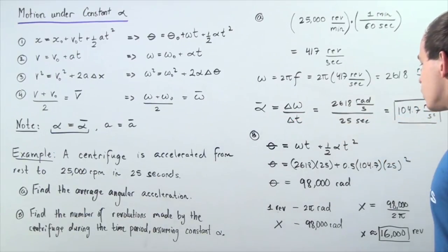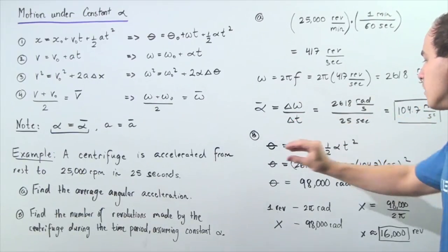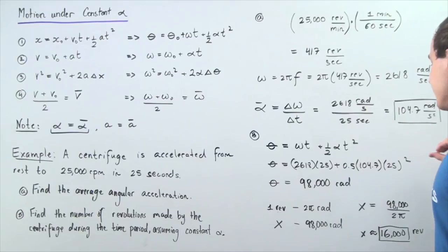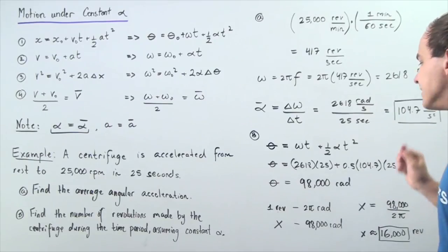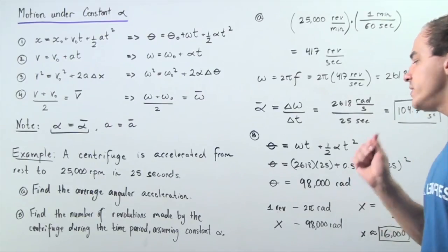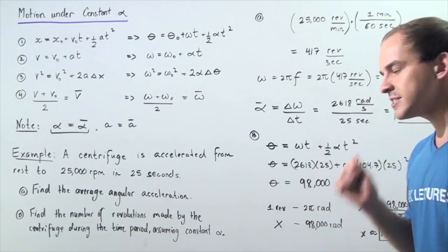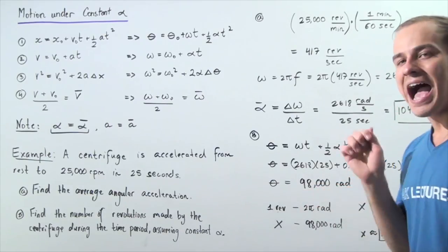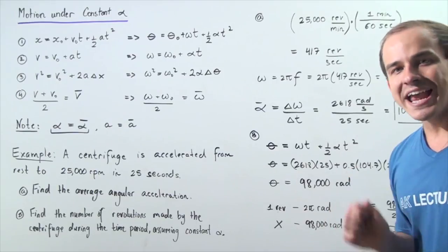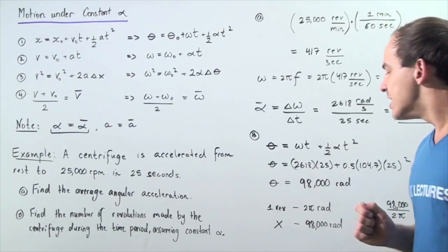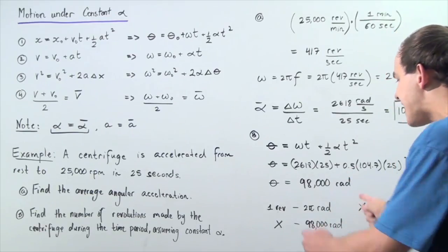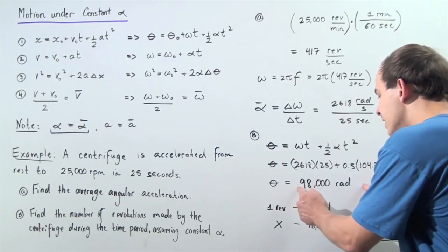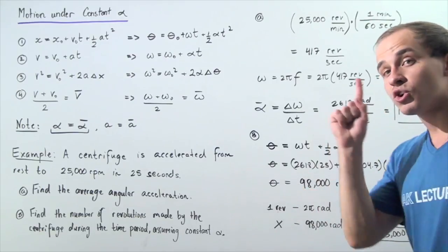We plug these quantities into our calculator and solve, getting approximately 98,000 radians for the total angle swept.